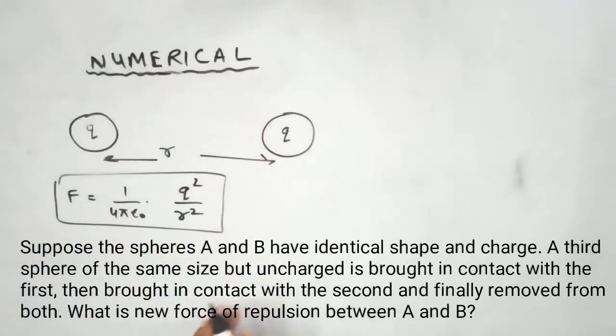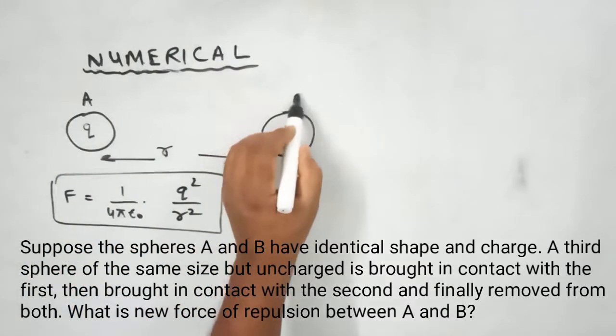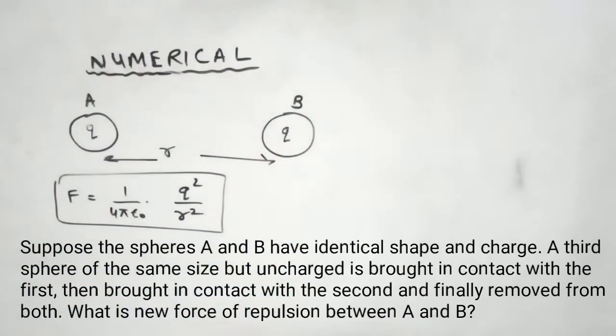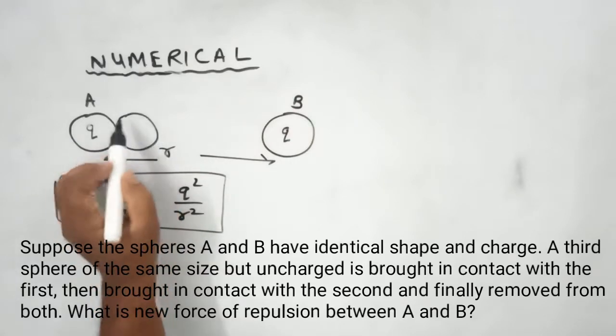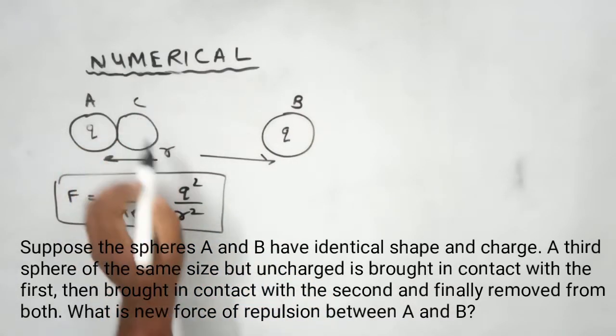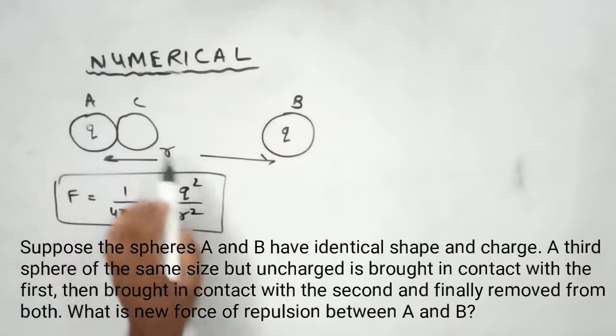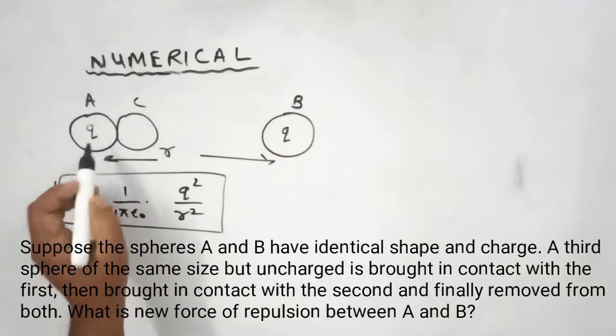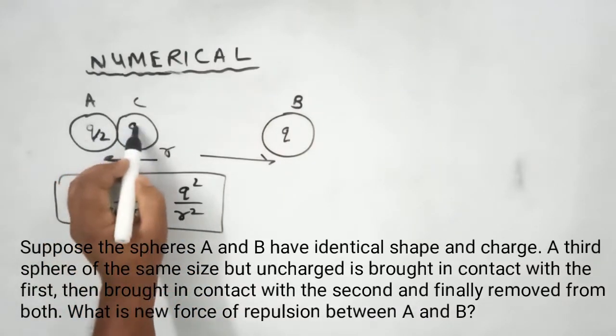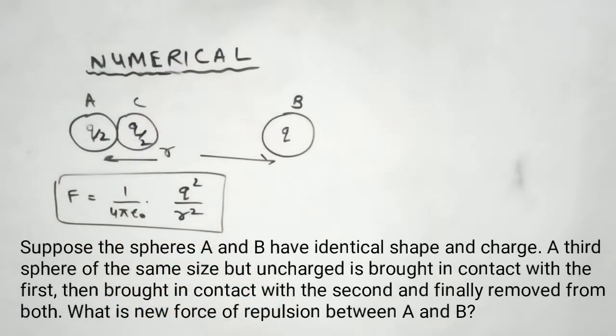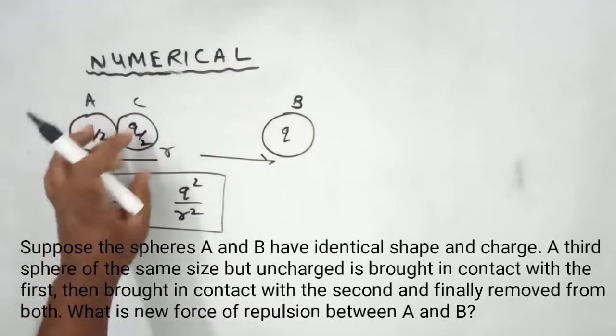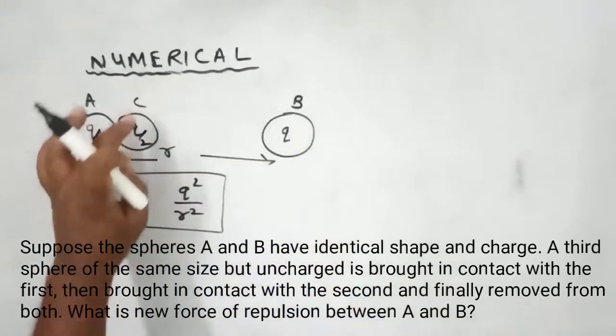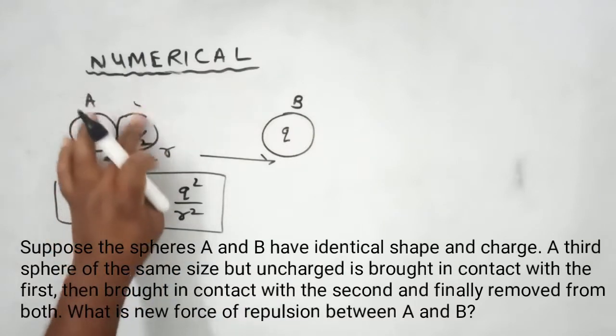Now the situation is: we have sphere A and sphere B. When the uncharged sphere C touches A, charge redistributes. The charge becomes Q by 2 and Q by 2. So sphere A now has charge Q by 2, and sphere C also has charge Q by 2.